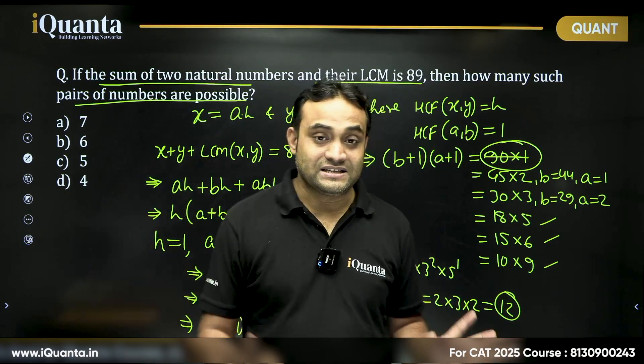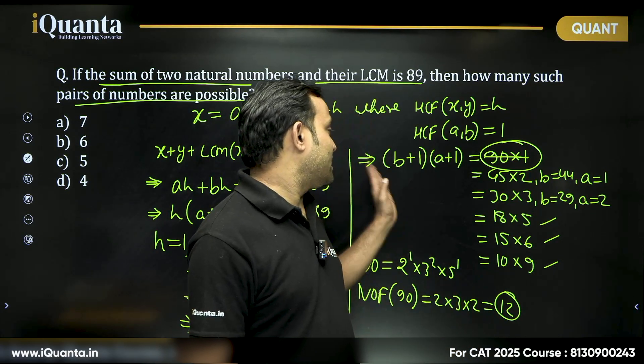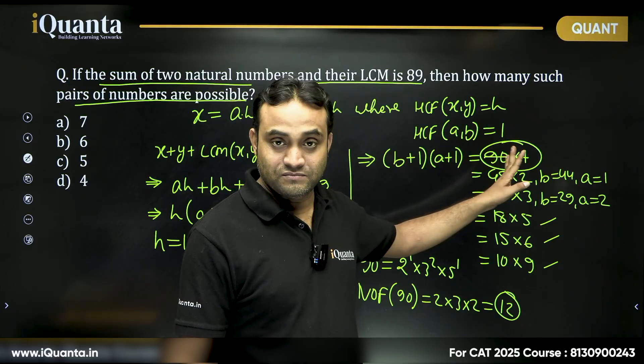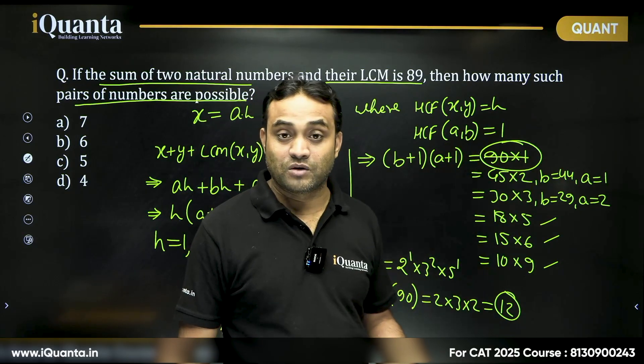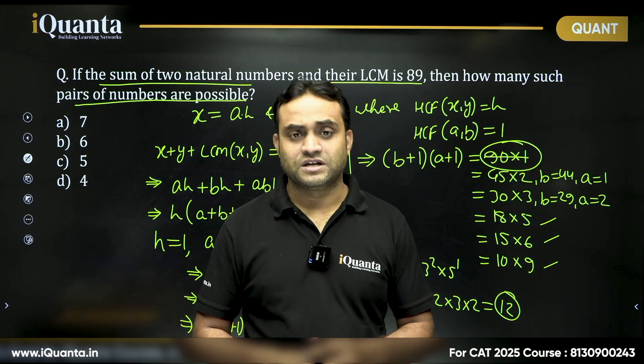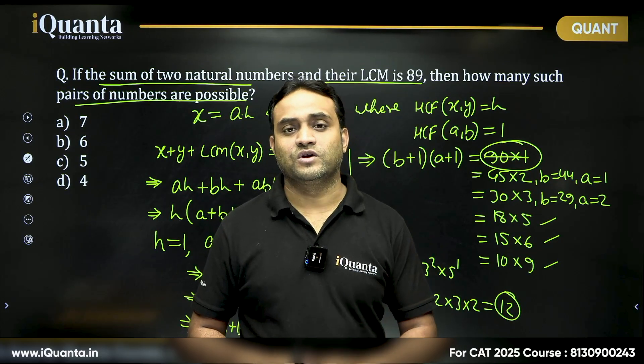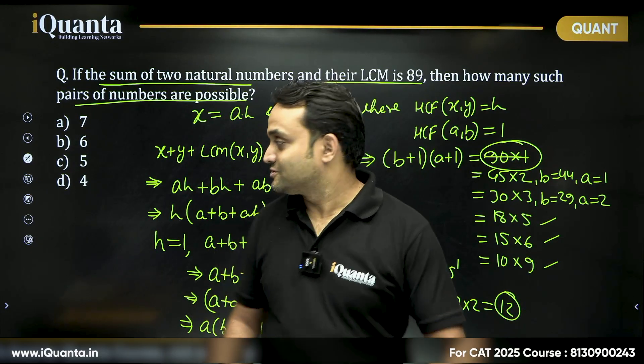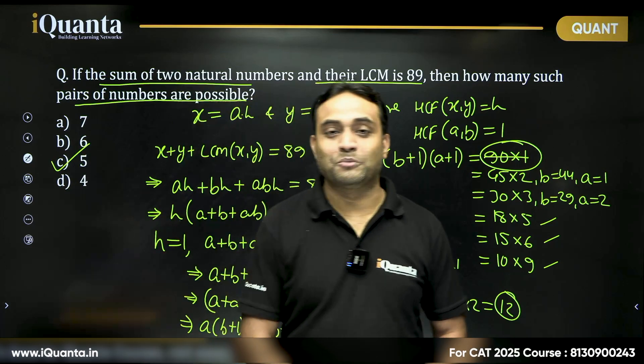If you get these kind of questions where you need to find (a+1)(b+1) equals something, where a and b are natural numbers, find the number of factors, divide it by 2, subtract 1, you'll get your answer. So the answer for this question is Option C, 5.